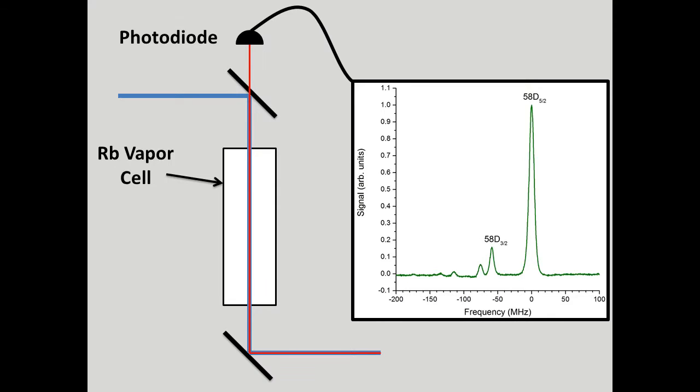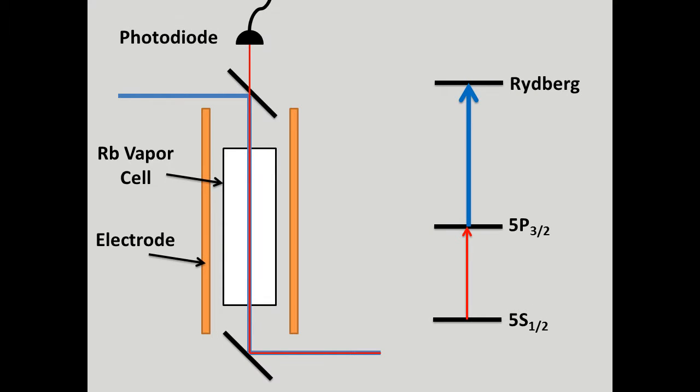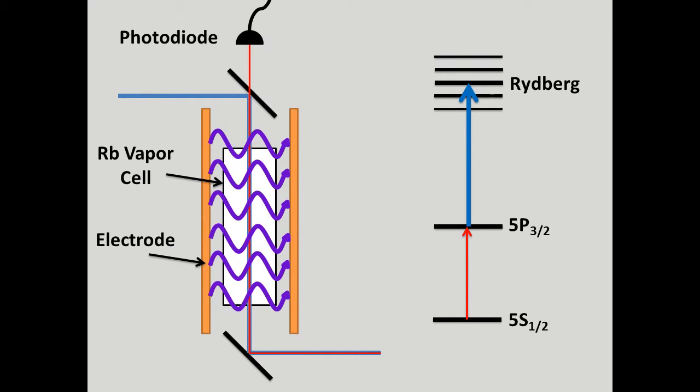We look at how the EIT peak changes when the atoms in the cell are exposed to an RF field. By quantifying this behavior, we are able to determine properties about the field within the cell. To create a field for the atoms, we apply voltages to the electrode plates surrounding the cell with an RF frequency. We apply frequencies of 50 and 100 megahertz, so no nearby Rydberg states are coupled.